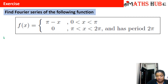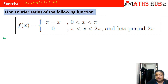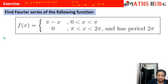Before we start with the Fourier series, let us calculate c and c + 2L. The general interval is c to c + 2L, and according to the problem our general interval is 0 to 2π. So c = 0 and c + 2L = 2π, which means L = π.